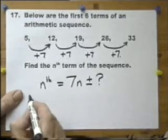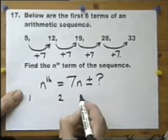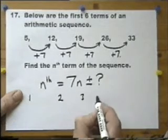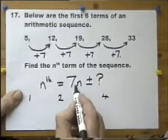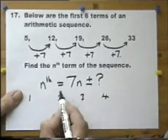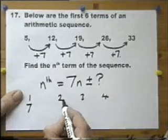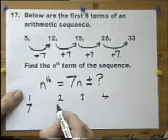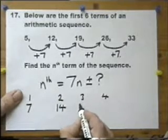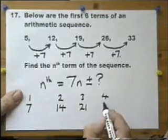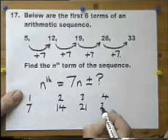Now if we say, let's work out the first term, the second term, the third term, the fourth term, using 7n. That means the first term is 7 times 1, the second term is 7 times 2, the third term is 7 times 3, and the fourth term is 7 times 4.